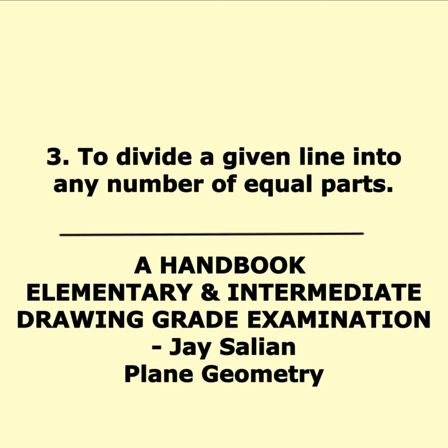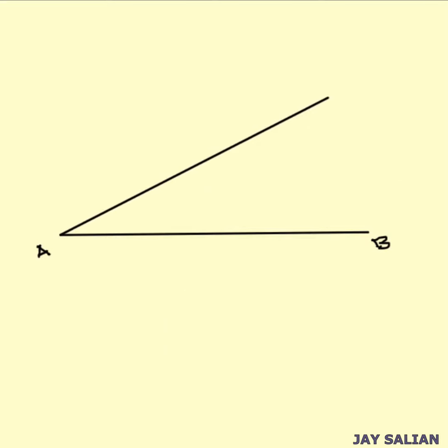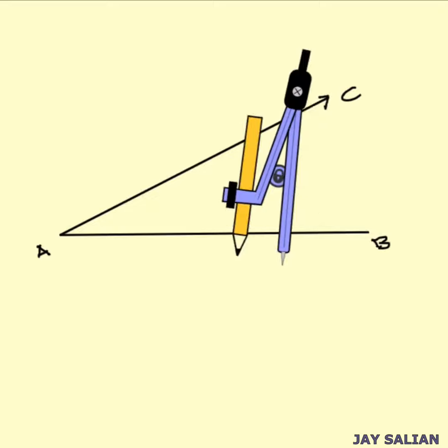How to divide a line segment AB into 5 equal parts using a compass and ruler. This breaks down the process clearly and highlights the key steps.